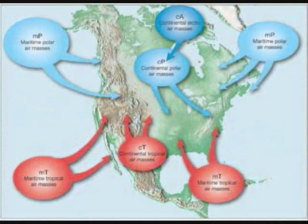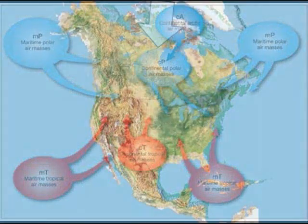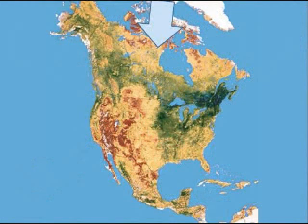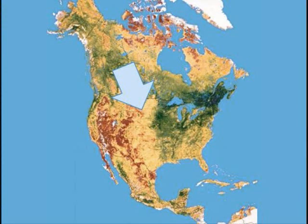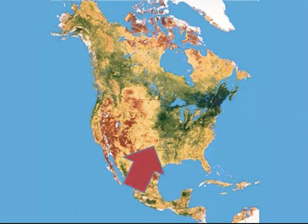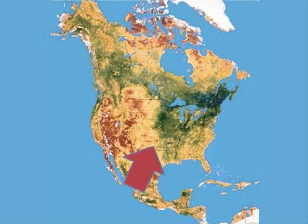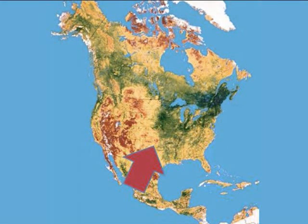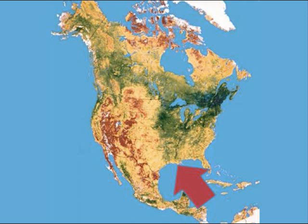Now let's talk about some places that these air masses form. A continental arctic air mass might be formed over northern Canada. A continental polar air mass might be formed over southern Canada or the northern United States. A maritime polar air mass might be formed over the ocean off the coast of New England. A continental tropic air mass might be formed over Mexico. A maritime tropic air mass might be formed over the Gulf of Mexico.